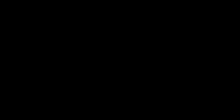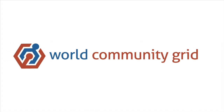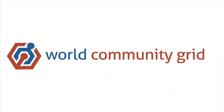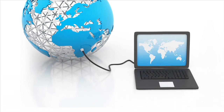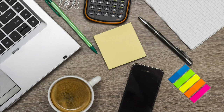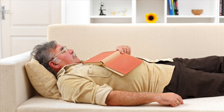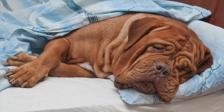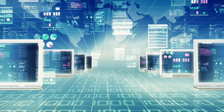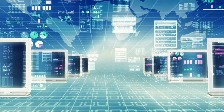The World Community Grid is a network of hundreds of thousands of computers and smartphones that use their idle time — when their owners are at home from work or asleep at night — to calculate scientific problems.